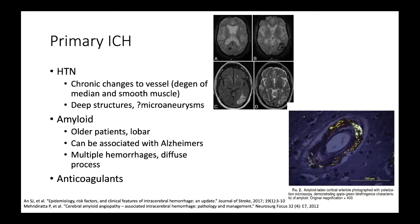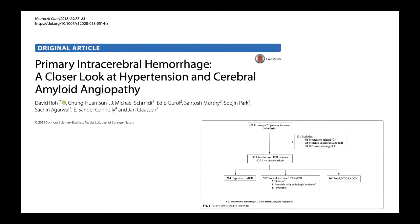Amyloid ICH almost always occurs in older patients and can be associated with Alzheimer's disease, as one of the apolipoproteins shares genetic lineage to the beta amyloid protein. A major source of primary ICH is also anticoagulant use, which becomes more prominent with an aging population. A study from the Columbia group looking at contemporary primary ICH found it's still mostly hypertensive ICH — more than double the representation of amyloid — and within amyloid cases, most don't have a tissue diagnosis.